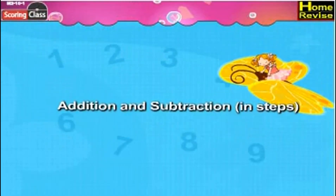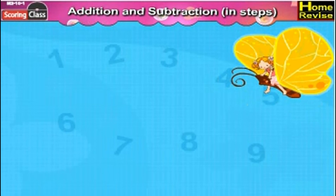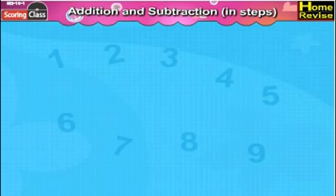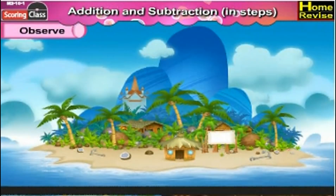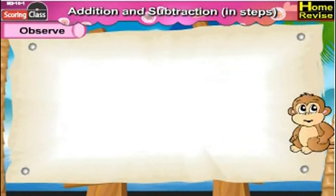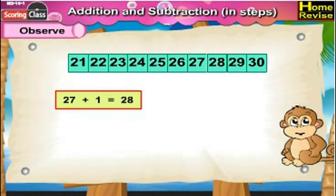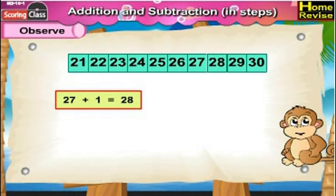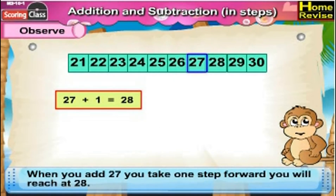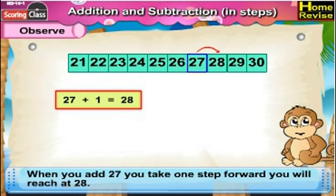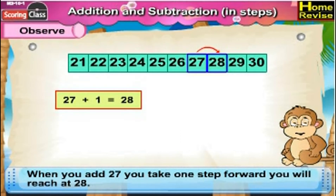Addition and subtraction in steps. Let's observe. 27 plus 1 is 28. When you are at 27, you take one step forward, you reach 28. So 27 plus 1 is 28.